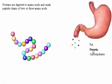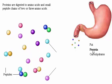Proteins are digested to amino acids and small peptide chains of two or three amino acids. In our representative protein, each circle represents a single amino acid.